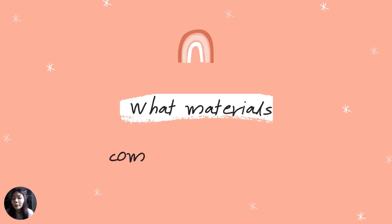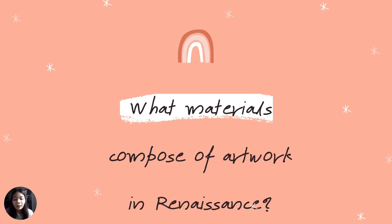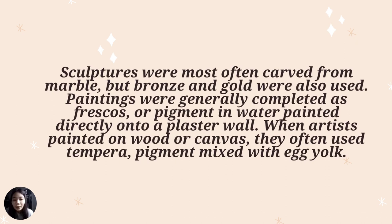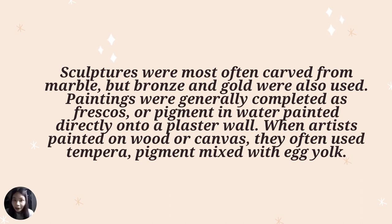What materials were used in renaissance artwork? Sculptures were most often carved from marble, but bronze and gold were also used. Paintings were generally completed as fresco — pigment in water painted directly onto a plaster wall. When art was painted on wood and canvas, they often used tempera: pigment mixed with egg yolk.